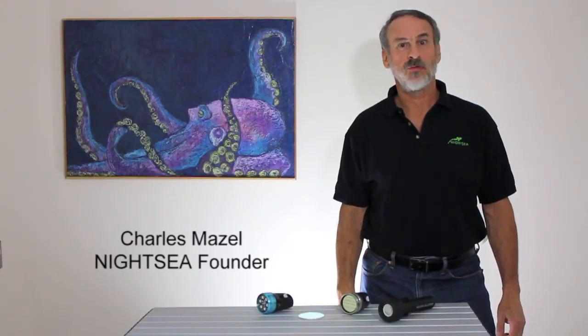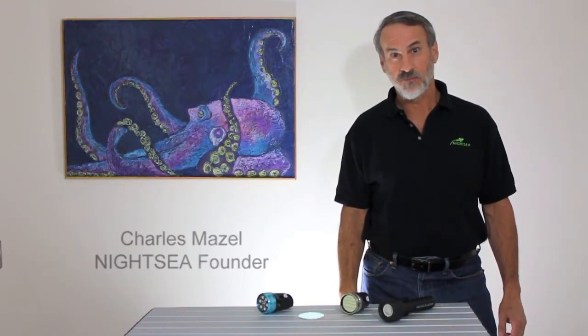To do fluorescence underwater you're best off with a powerful blue light. We're often asked about the relative merits of getting a dedicated blue light versus adding an excitation filter to a powerful white light.